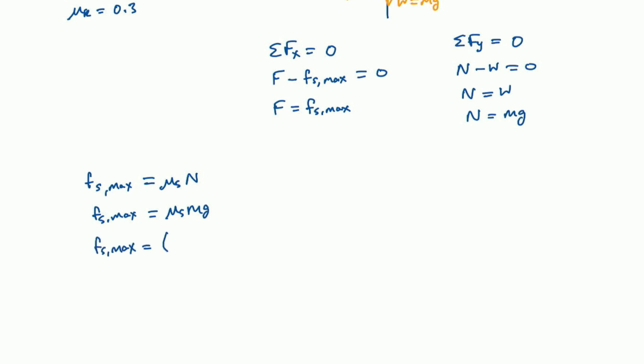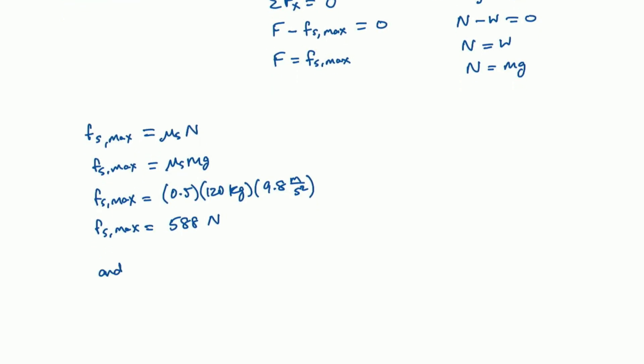So μ_s is 0.5, M is 120 kilograms, and then G is 9.8 meters per second squared. F_s,max is 588 newtons. And we said that the push force F is equal to F_s,max. So our maximum push force is 588 newtons. So that is our answer to part A.